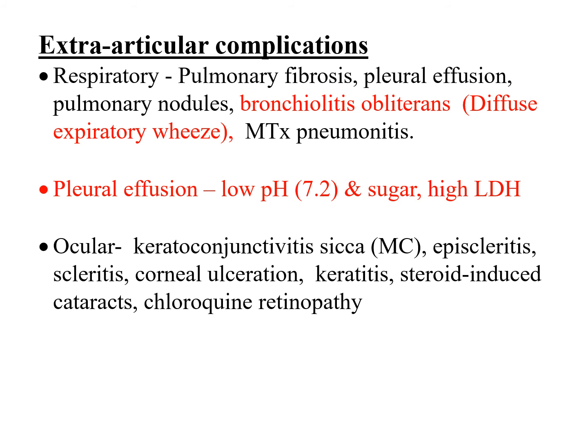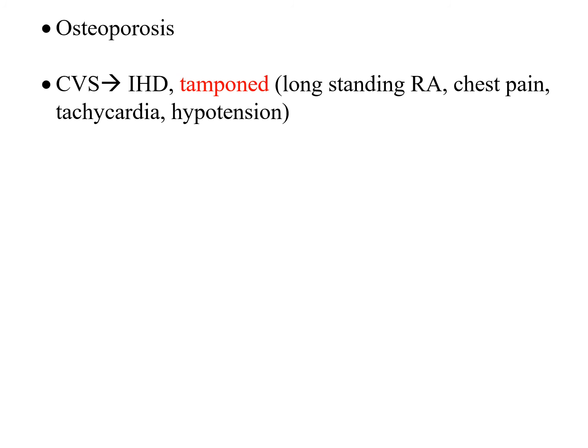In the eye, episcleritis presents as a localized redness which is not painful, whereas scleritis is a more diffuse redness and is quite painful. The patient can also have osteoporosis and pericarditis. If pericarditis is untreated, they can develop tamponade, which presents with hemodynamic instability, chest pain, tachycardia, and hypotension.